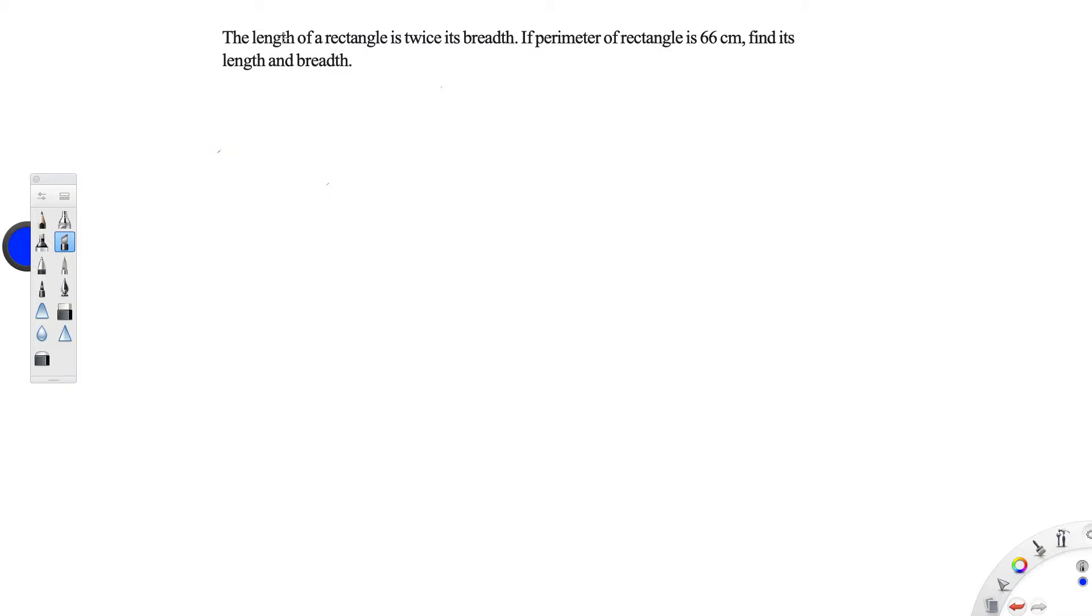They have given here the length of the rectangle. The length of the rectangle is twice its breadth, but they did not mention what is its breadth. They just mention here perimeter of the rectangle is 66 cm. So from the perimeter of the rectangle formula only, we have to find the length and breadth.